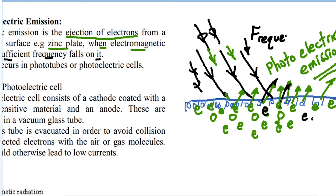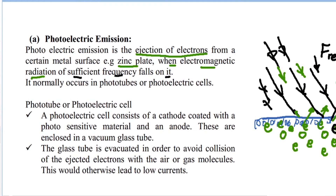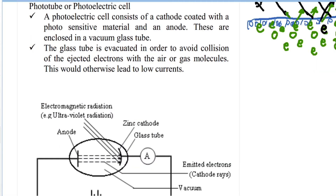If the incident radiation has a frequency that is high enough, it will cause these electrons to be ejected off the metal surface — that is photoelectric emission. Photoelectric emission is the ejection of electrons from a metal surface when electromagnetic radiation of high enough frequency falls on it. It normally occurs in photo tubes and photoelectric cells.